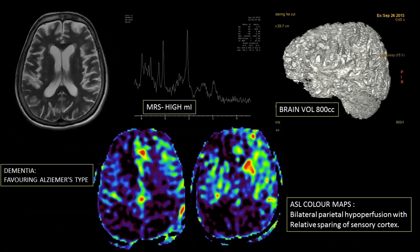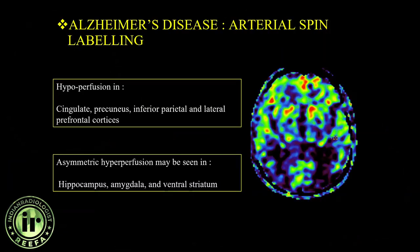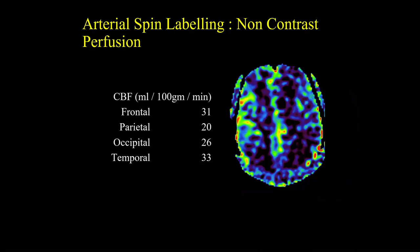Coming to the role of ASL in dementia and psychiatric disorders — imaging now plays a very important role in dementia workup. ASL is a potential technique that, without contrast and by adding just four minutes extra to your protocol, can provide information about brain perfusion. In Alzheimer's pattern dementia, hypoperfusion is seen in the cingulate, precuneus, inferior parietal, and lateral prefrontal cortices, while asymmetric hyperperfusion may be seen in hippocampus, amygdala, and ventral striatum. In vascular dementia, global hypoperfusion is seen; in frontotemporal dementia, hypoperfusion in frontal and temporal lobes. Cerebral blood flow can be quantified by drawing ROIs on these color maps.